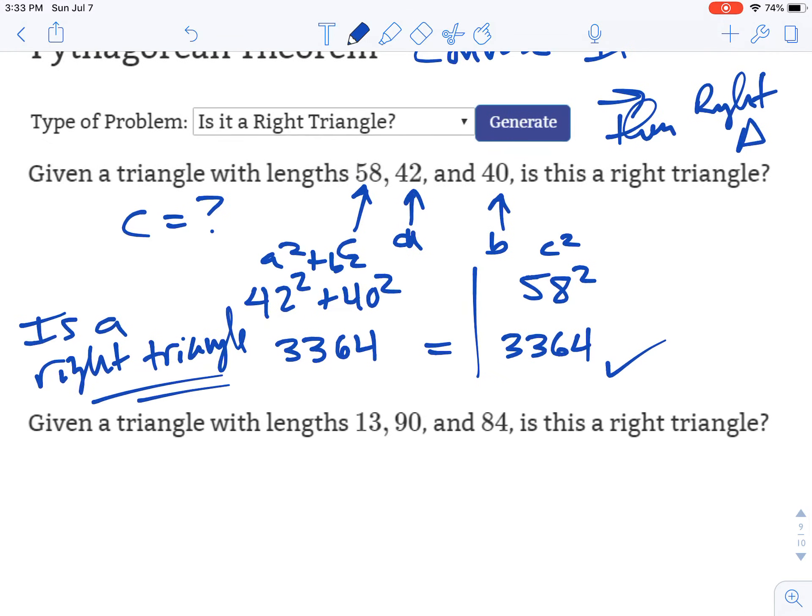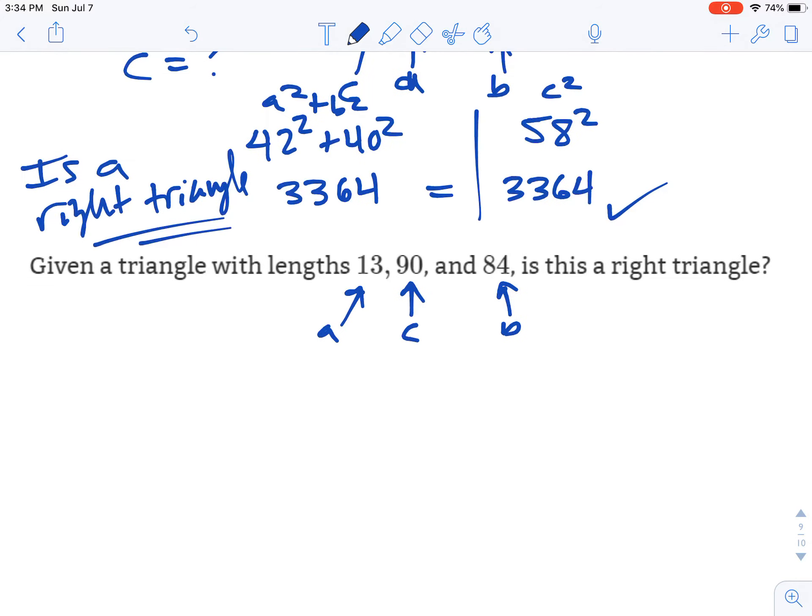All right, let's try one more here. So this time again, we've got our three side lengths. The biggest one has to be c. a and b can be either or. It doesn't matter. So we're going to test to see is a squared plus b squared equal to c squared. So let's do that.